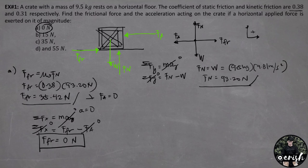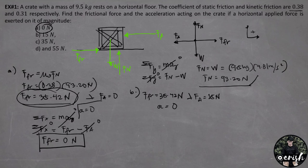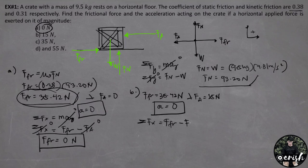For letter B, the applied force is 15 N. The static friction force is still 35.42 N, which is larger than 15 N, meaning there is still no movement. The acceleration remains 0. By summation of forces at x, force of friction equals force applied, so the force of friction is 15 N.